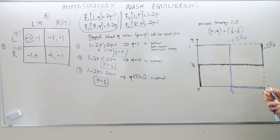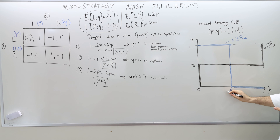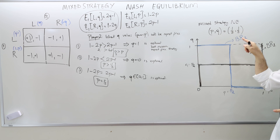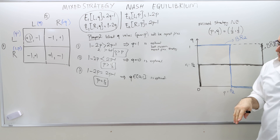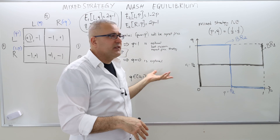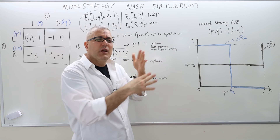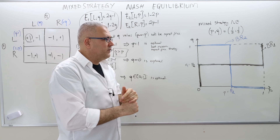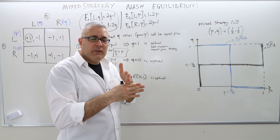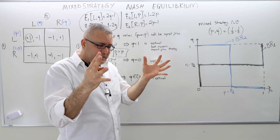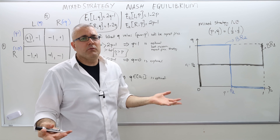These two curves intersect at one and only one point, which corresponds to P equals one-half, Q equals one-half — the mixed strategy Nash equilibrium of this game, and in fact the only Nash equilibrium. The point of intersection is the Nash equilibrium because at that point no player will regret. Given that this outcome is realized, both players will say: I don't regret because I did the best I could do.